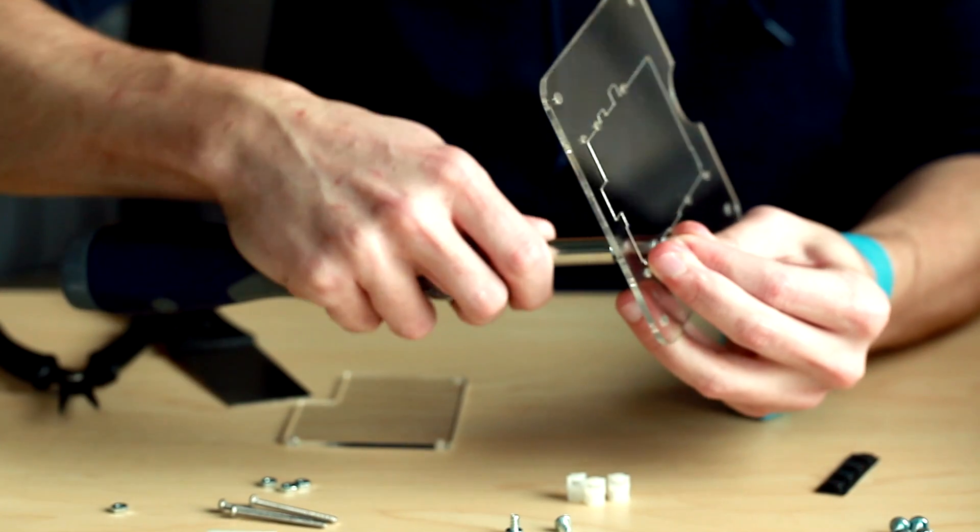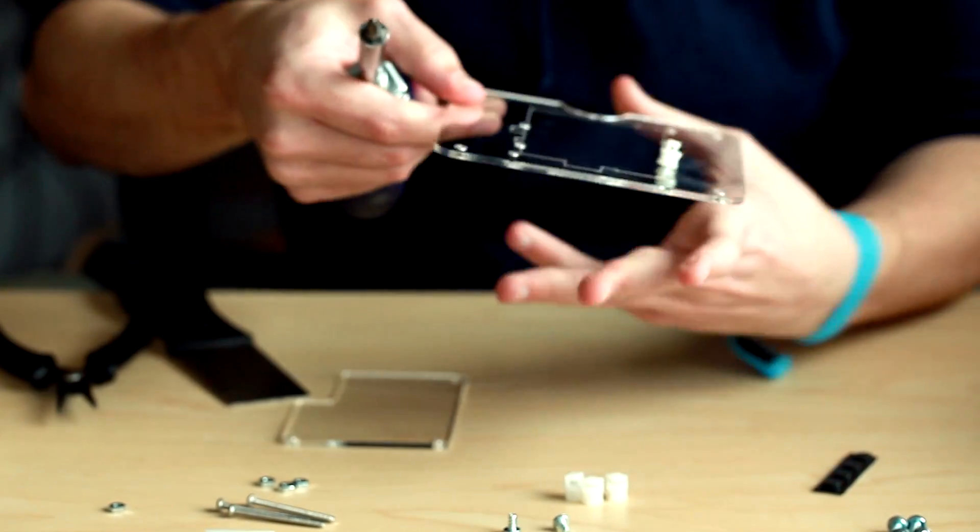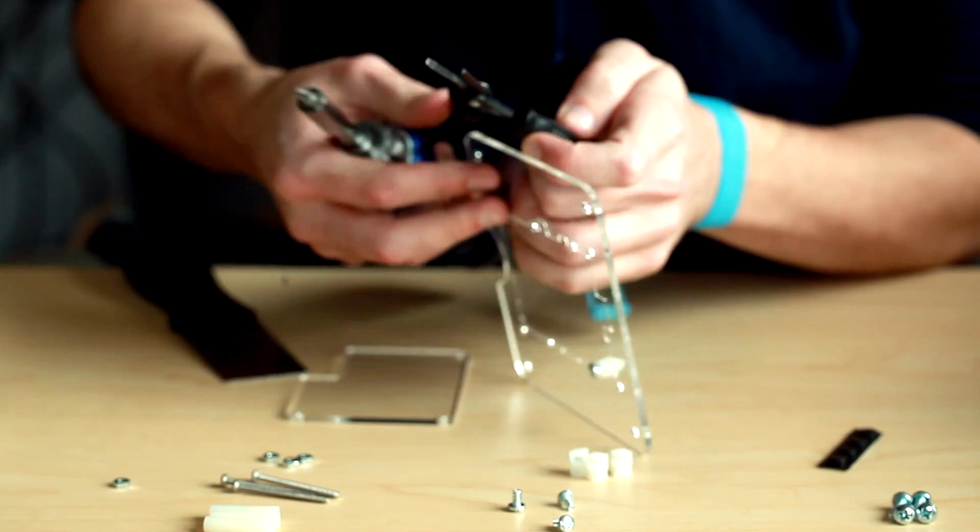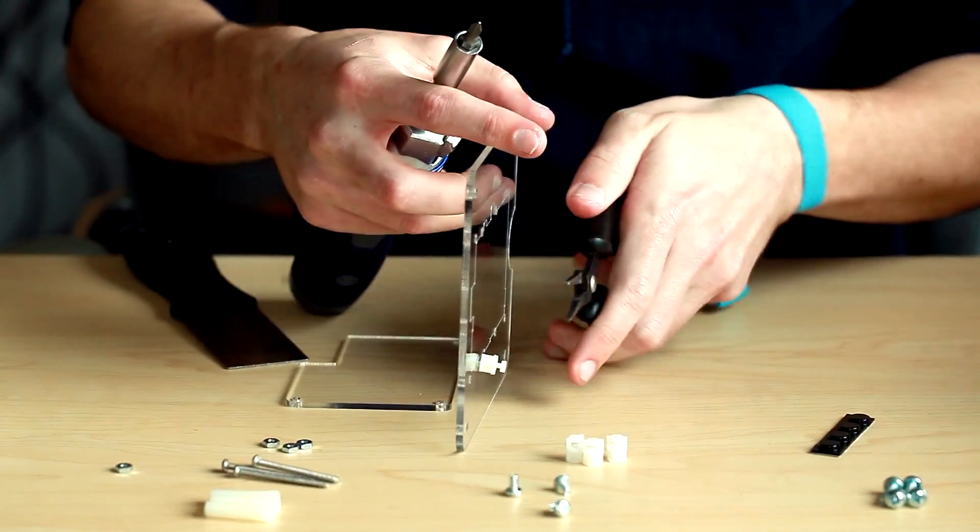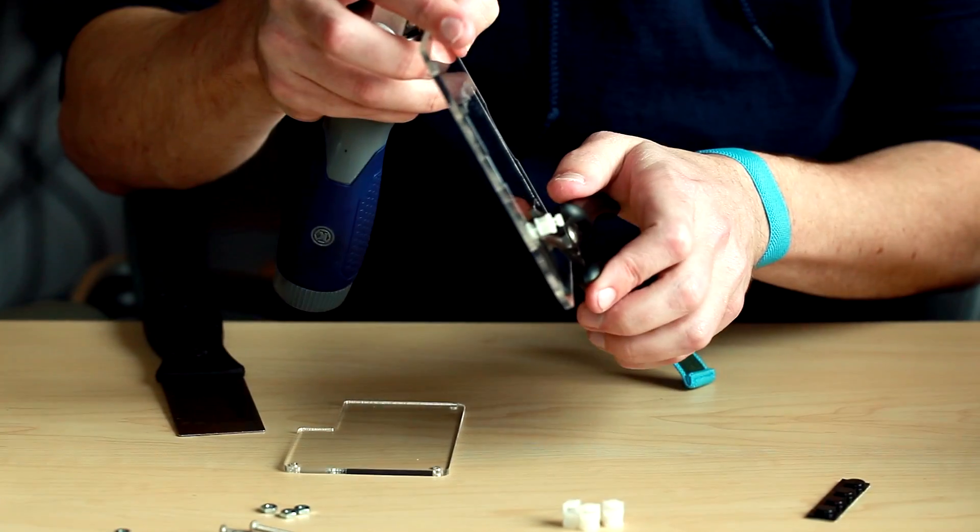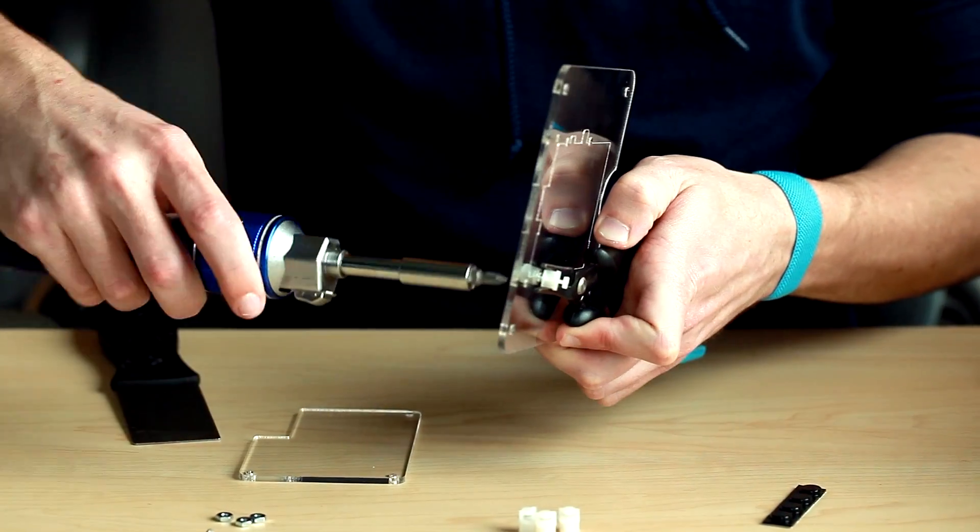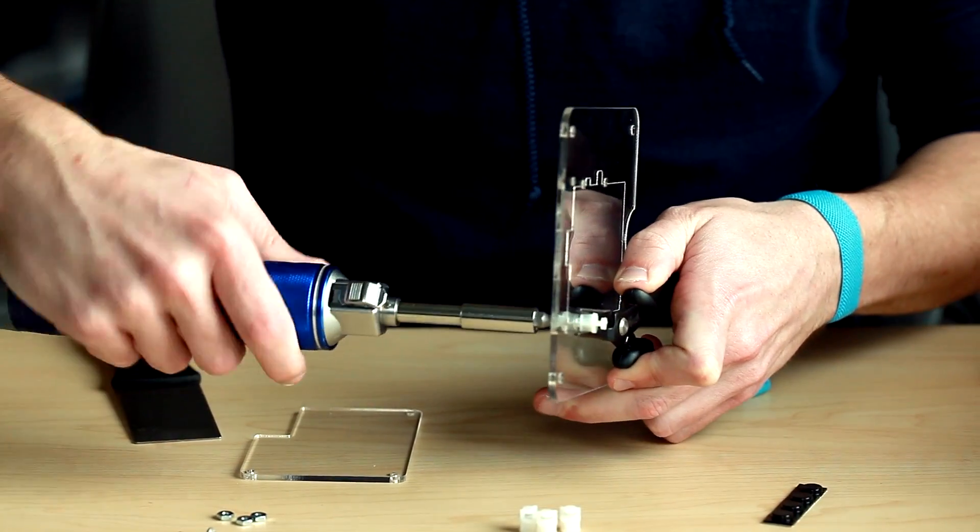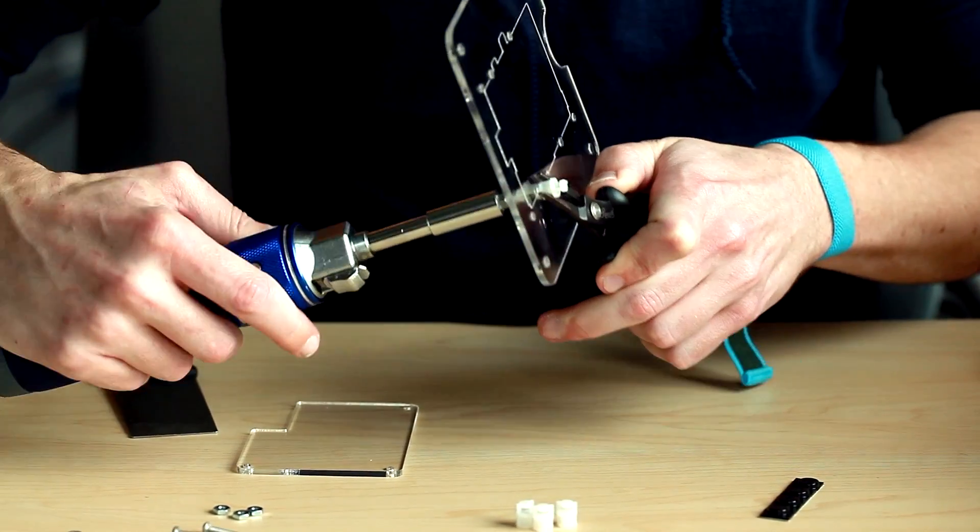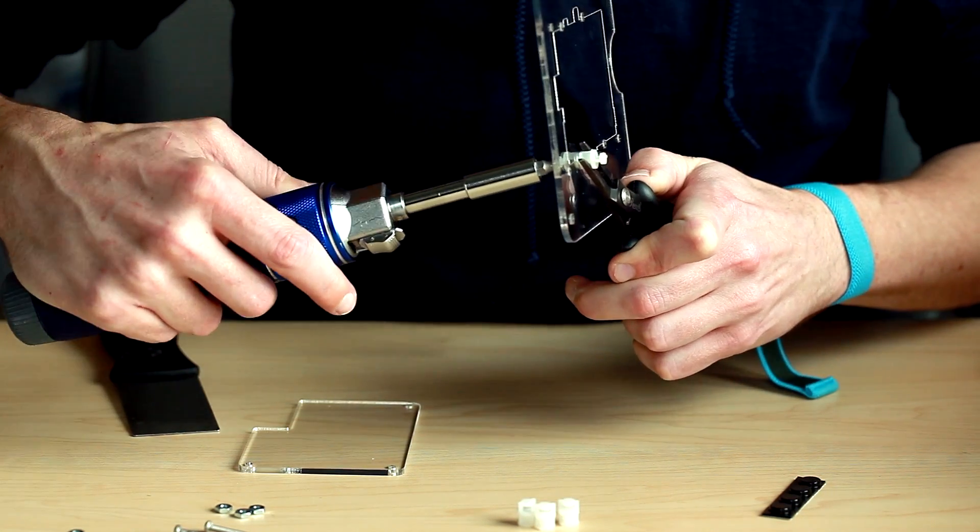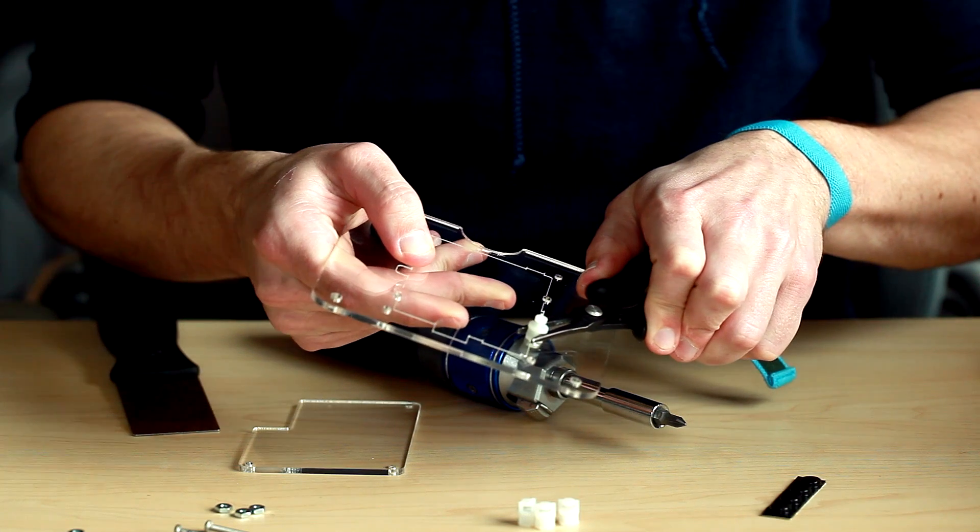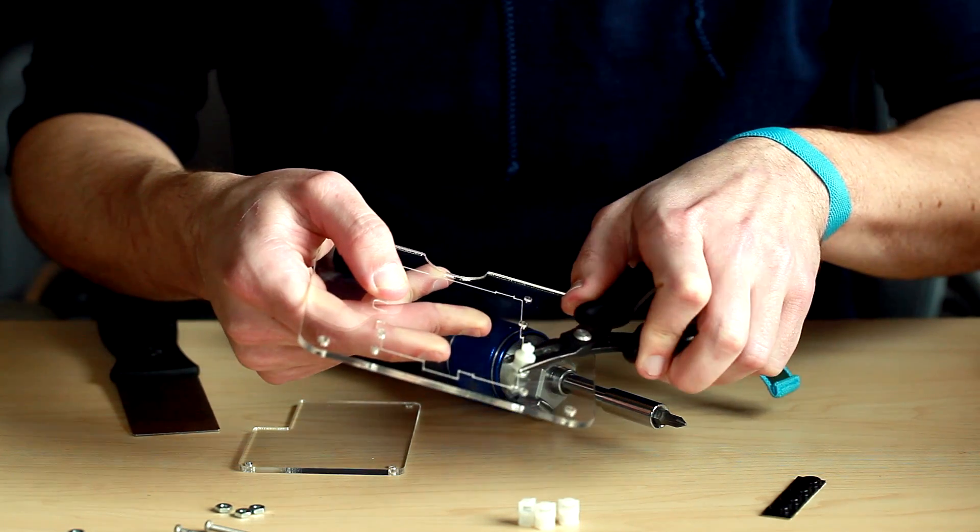This is where having three hands comes in handy. And then take your needle nose pliers, holding the plastic tab firmly in place, and screwing that in nice and tight. From there you can manually adjust it, so it's nice and parallel.